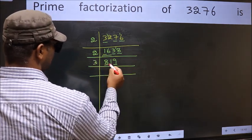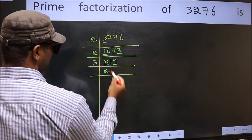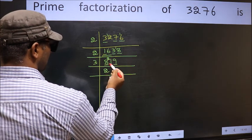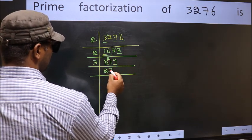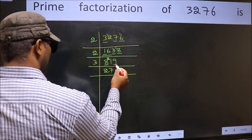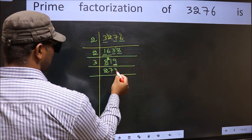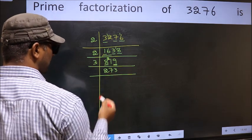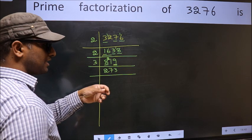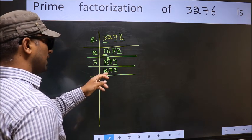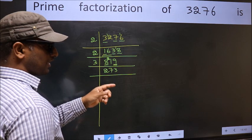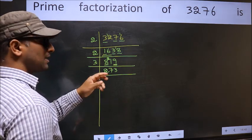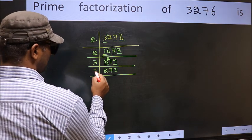First number 8. A number close to 8 in the 3 table is 3 times 2 equals 6. 8 minus 6 equals 2, carry forward 21. When do we get 21 in the 3 table? 3 times 7 equals 21. The other number 9. When do we get 9 in the 3 table? 3 times 3 equals 9. Now to check whether it is divisible by 3: add the digits, 2 plus 7 plus 3 equals 12, and 12 is divisible by 3. So this number is also divisible by 3. So take 3 here.